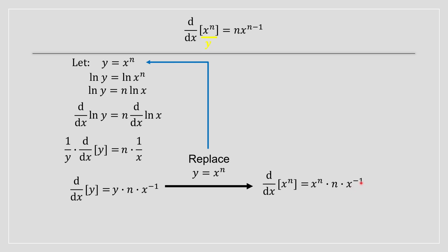This can be rewritten as one single exponent using the laws of exponents, so it's rewritten as x to the power of n minus 1, ultimately proving the power rule from calculus 1.